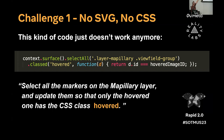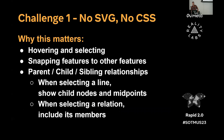This line of code would not work with our new renderer at all. It's basically saying: select all the markers on the map layer, update them so that only the hovered one has the CSS class 'hovered.' It sounds simple, but there's no more Mapillary layer, no more markers, no more CSS classes. All of this stuff went away, so we had to find new ways of doing all of it in the new renderer.